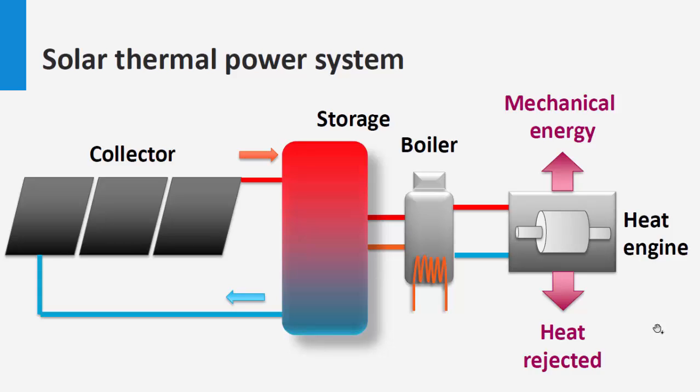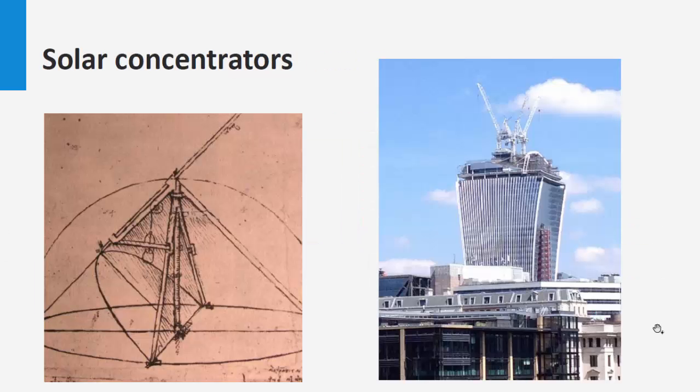Solar concentration systems have been known and explored for a long time. From the first developed by Archimedes to the concentrators designed by Leonardo da Vinci. A more recent example is the Walkie-Talkie building in London, which by virtue of its shape is able to concentrate light onto a small area on the streets of London, where temperatures of more than 90 degrees Celsius have been reached, and it has even burnt some objects in the neighboring shops.